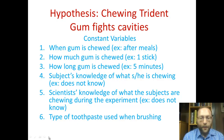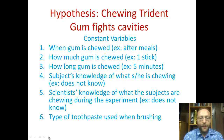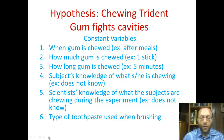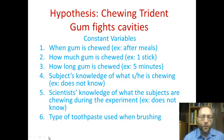Usually on an exam you'll be asked for two. One would be when gum is chewed — an example would be after meals. How much gum is chewed — an example would be one stick of gum. How long someone chews the gum — an example would be five minutes. Another constant is the subject's knowledge of what they are chewing, like they don't know. If you know what it is, your knowledge may affect what actually happens. You'll see a bit more of this tomorrow in the demonstration.